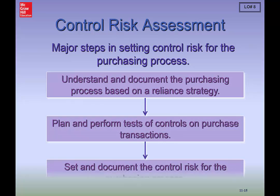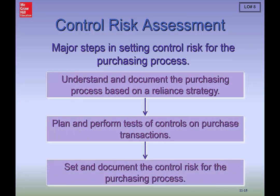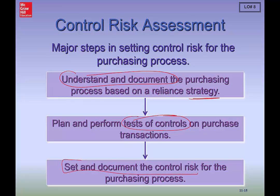There are major steps for addressing control risks. First, you have to understand and document the entire purchasing process to ensure it aligns with the strategy of the organization. As an auditor, you must perform tests of controls and then set and document the risk associated with those controls. Keep in mind that our auditing function is an integrated audit, meaning we not only audit the financial statements but also the internal controls.